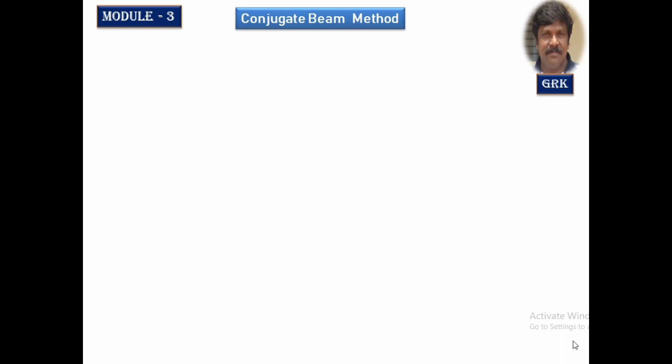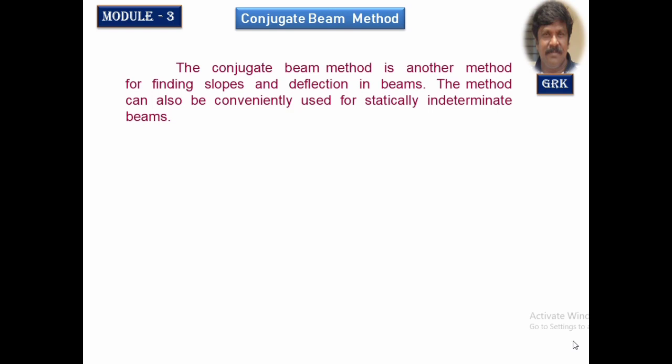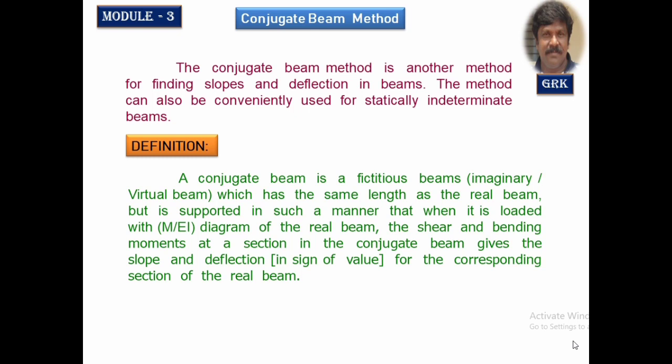Welcome to the session on the conjugate beam method, which is another method of finding out the slope and deflection of beams. The beams can be either a determinate beam or a statically indeterminate beam. In previous sessions, you have already seen how to find slope and deflection by the moment area method, double integration method, Macaulay's method, and many more. Here, let us understand how to find deflection and slope by the conjugate beam method.